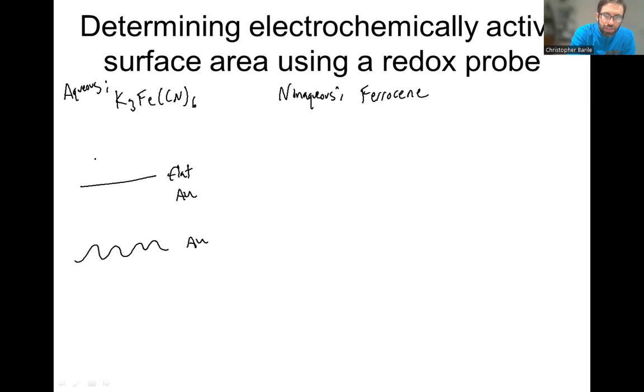What you're going to do is measure a CV in something like 100 millimolar KCl that's going to be your supporting electrolyte, just an example. You could use potassium perchlorate. And then like 1 millimolar of this redox active probe.